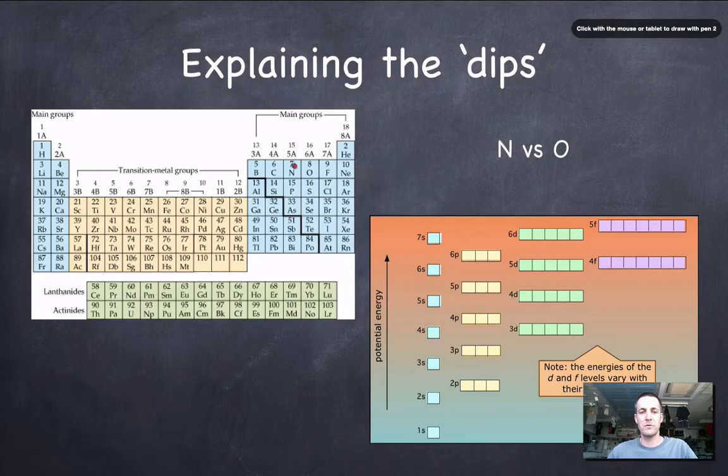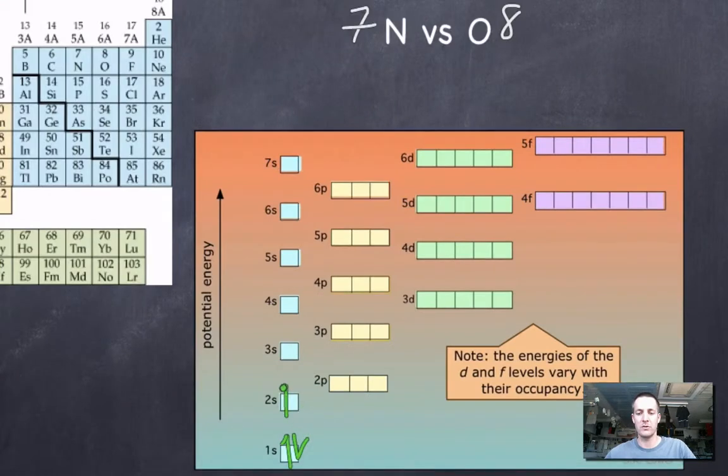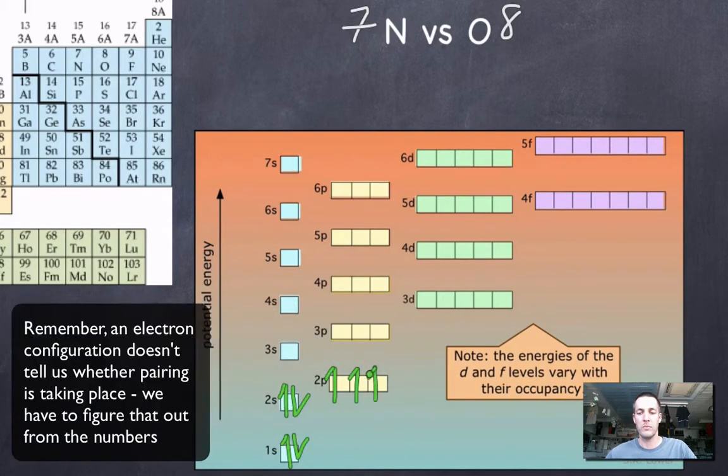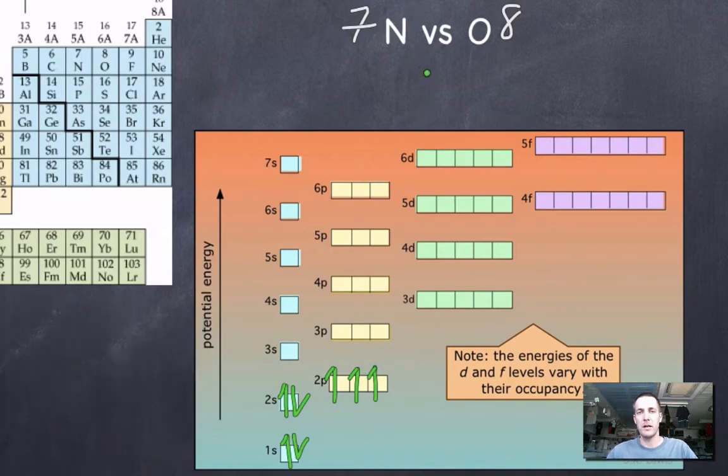Now, this other dip that we saw was between groups 5 and 6, so nitrogen and oxygen, for example. Nitrogen with its 7 electrons and oxygen with 8. Again, putting the electrons into boxes, we can say something about the electron configurations, but what's more important in this case is seeing what is happening with pairing. Now, nitrogen's got 7 electrons, so we can put those 7 into these, or more importantly, these 3 electrons into these separate p orbitals and avoid pairing them up. Remember, electrons don't like pairing up unless they have to. If you give an atom an 8th electron, like with oxygen, you've got no choice.